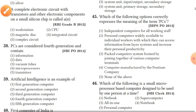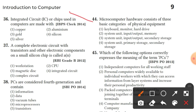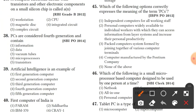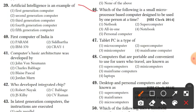Question 44: microcomputer hardware consists of 3 basic categories of physical equipment: system unit, input/output, and memory. Option 2 is the right answer. Question 45: the term PC means personal computers, widely available to individual workers so they can access information and increase their personal productivity. Option 2 is the right answer. Question 46: a small microprocessor-based computer designed to be used by one person at a time is called a personal computer.